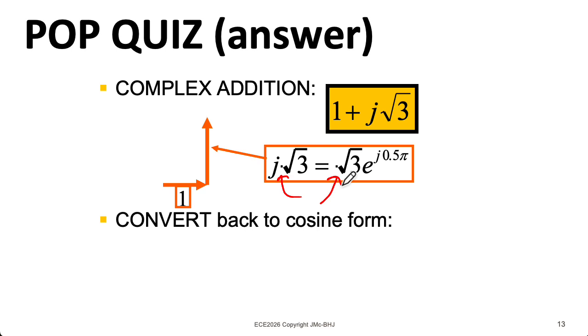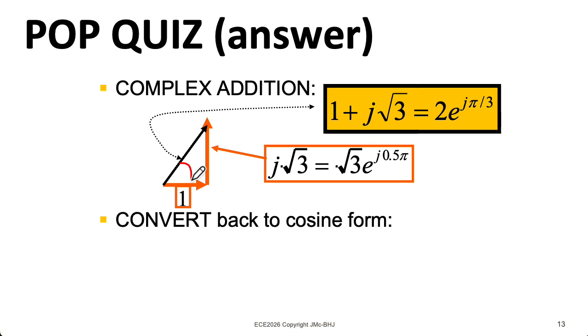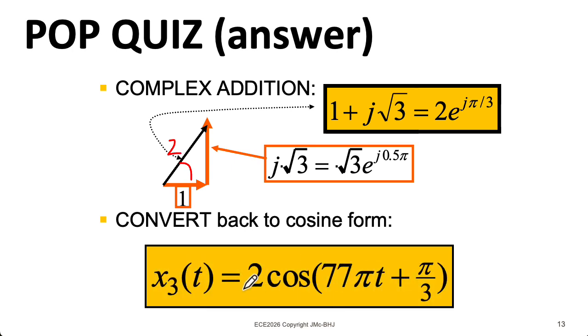I don't know why the equation is showing up strangely here. My colleagues made these slides a million years ago, and my version of Microsoft PowerPoint refuses to open them. So I can't fix anything without actually redoing the equation from scratch. And I'm feeling too lazy to do that. Sorry. Anyway, if I think about this triangle here, this is my classic 30, 60, 90 right triangle. So the angle here corresponds to 60 degrees or π over 3 radians, and my length here is 2. So in the cosine form, I just have an amplitude of 2 and a phase of π over 3, and I have my original frequency of 77π.